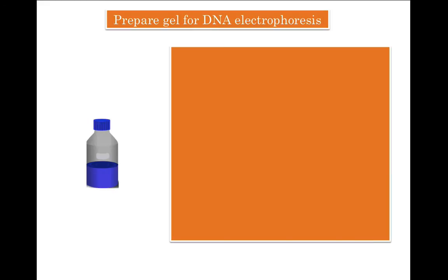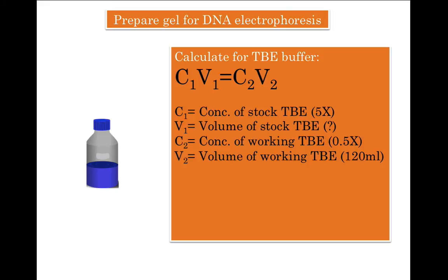Now we need to calculate the amount of buffer required, using the formula C1V1 = C2V2. C1 is the concentration of stock TBE, which is 5x. V1 is the volume of stock TBE — unknown, and what we want to calculate. V1 is the amount of stock TBE buffer we need to dilute to make the working solution. C2 is the concentration of the working TBE solution, which is 0.5x. V2 is the volume of working TBE solution, which is 120 ml — the volume of gel we want to prepare.